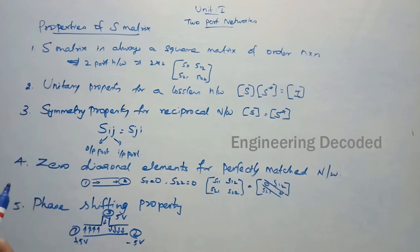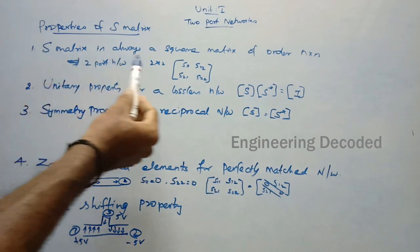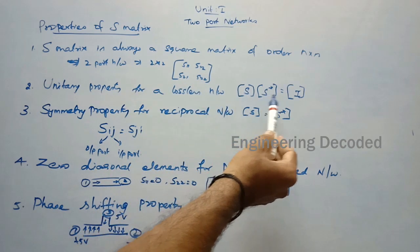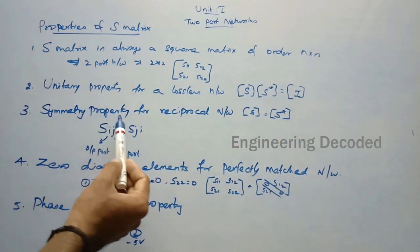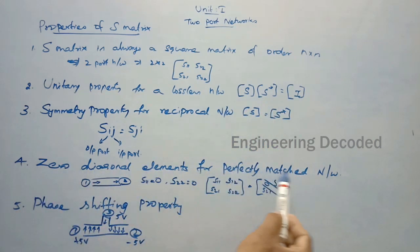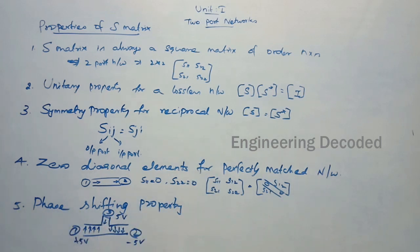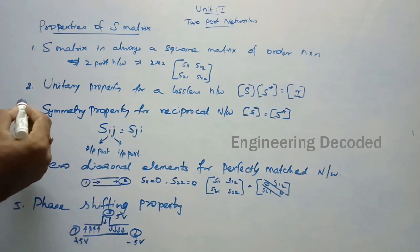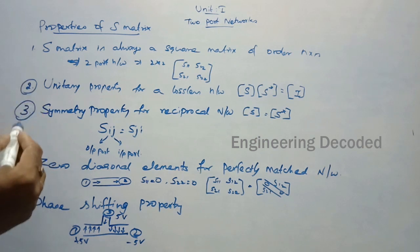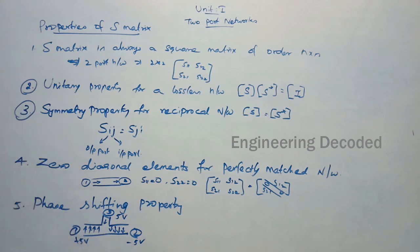To summarize, the five properties of an S-matrix are: first, S-matrix is always a square matrix of order N×N; second, unitary property for a lossless network where S × S-transpose = I; third, symmetry property for a reciprocal network where S = S-transpose; fourth, zero diagonal elements for a perfectly matched network; and fifth, phase shifting property. We also have proofs for the unitary property and symmetry property, which we will see in the next class. Thank you.